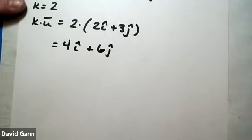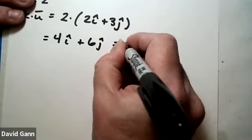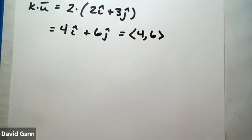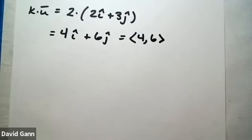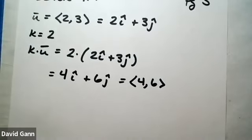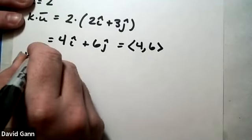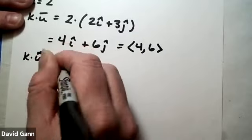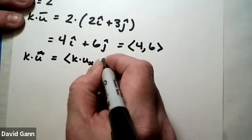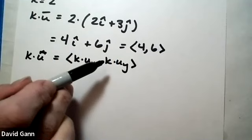Well, note first that by the algebraic representation, this is 2 times the quantity 2i plus 3j. We can't only multiply the x component or the y component, but it will distribute such that this becomes 4i plus 6j. When I represent this back in bracket notation, this equals ⟨4, 6⟩.